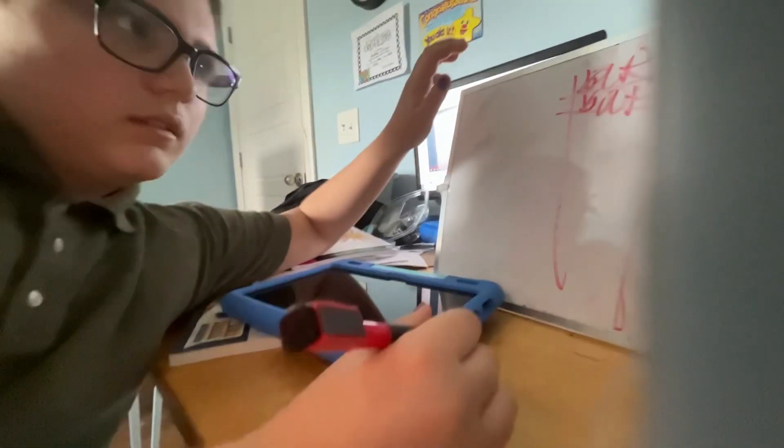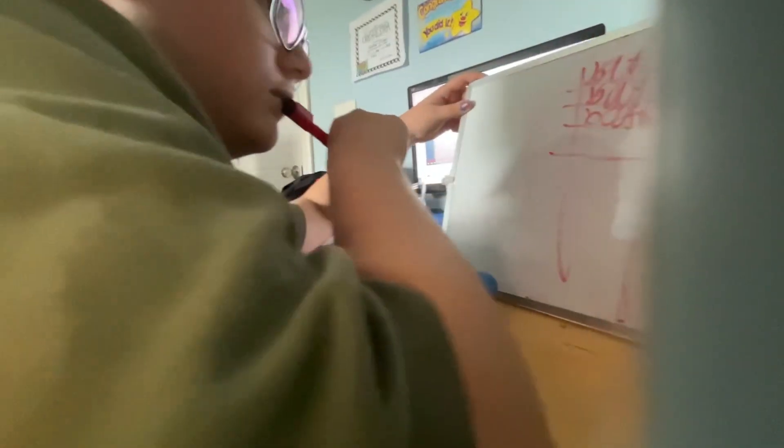We're going to change the K in book to a T to get boot, and add an H to get B-O-O-T-H, booth, and change the B in booth to S-M-O-O-T-H.